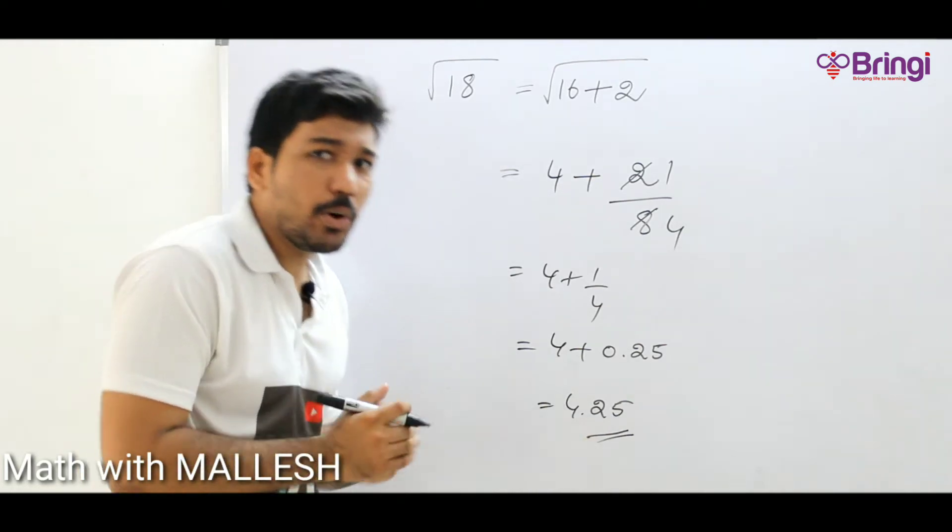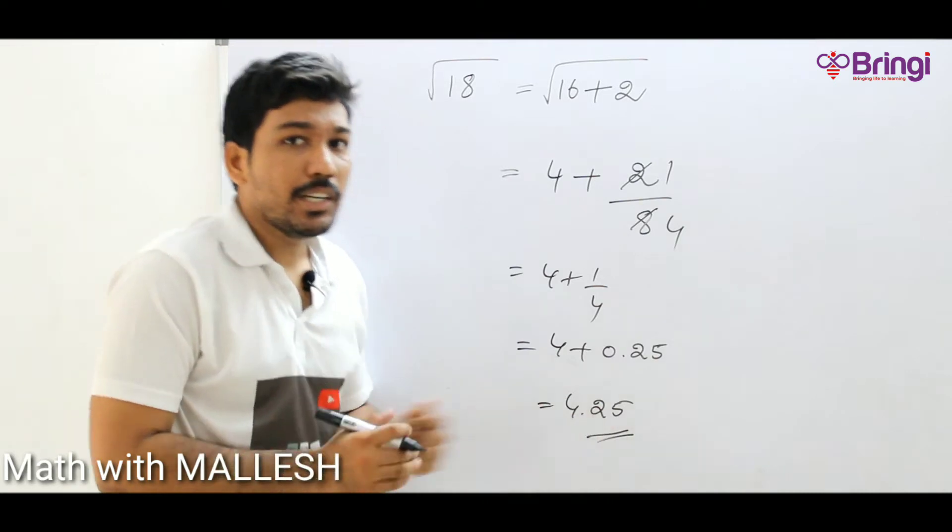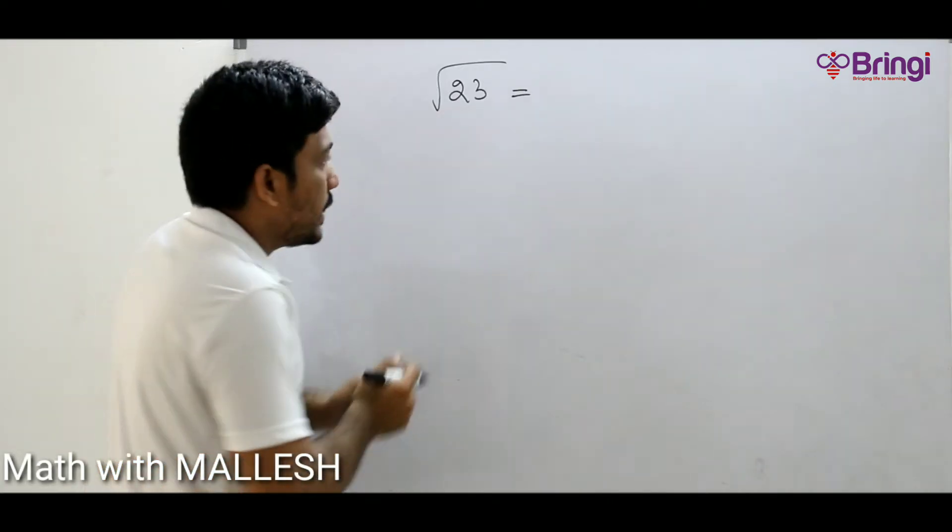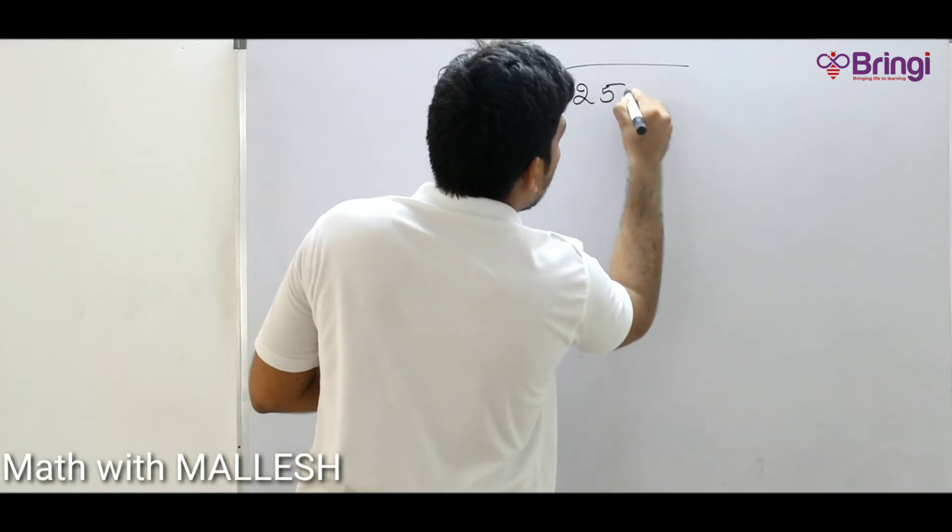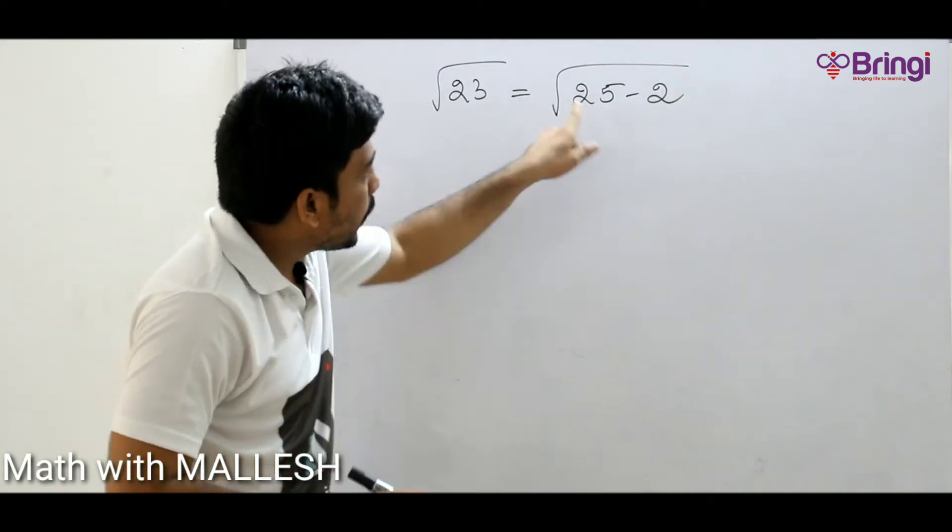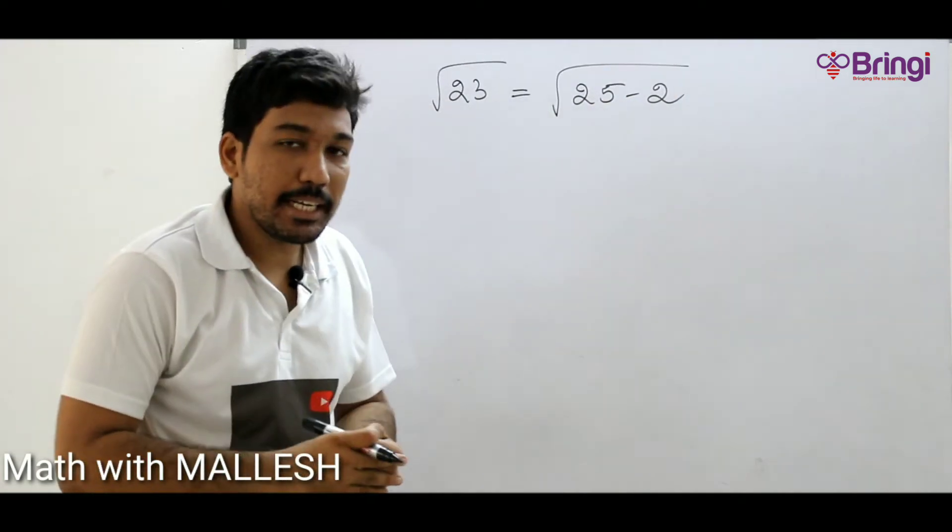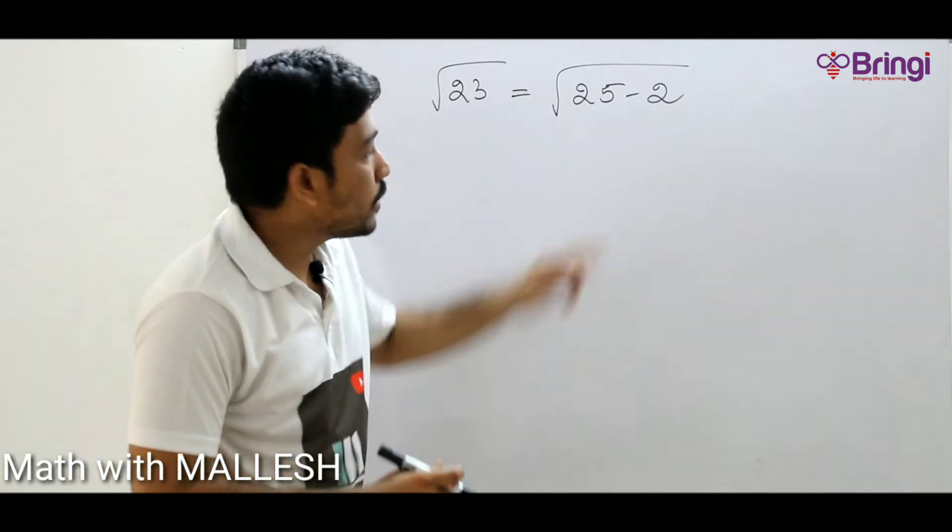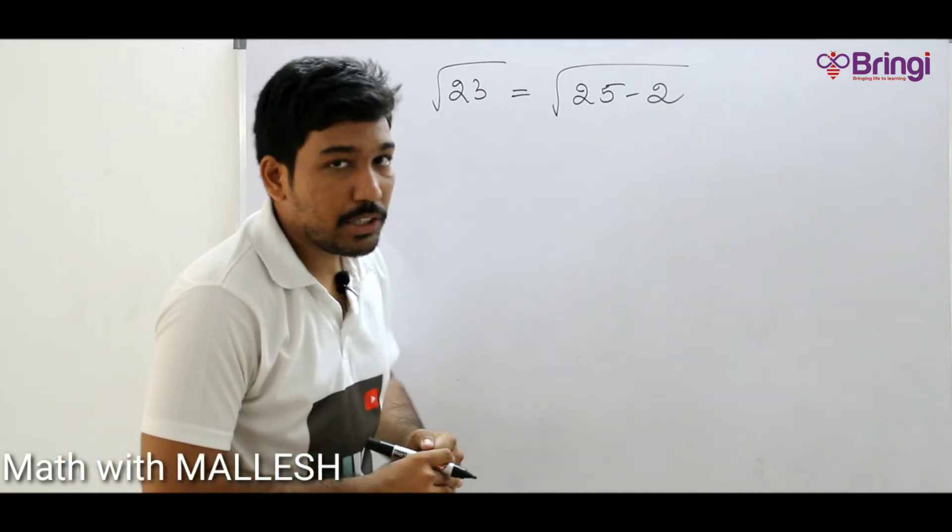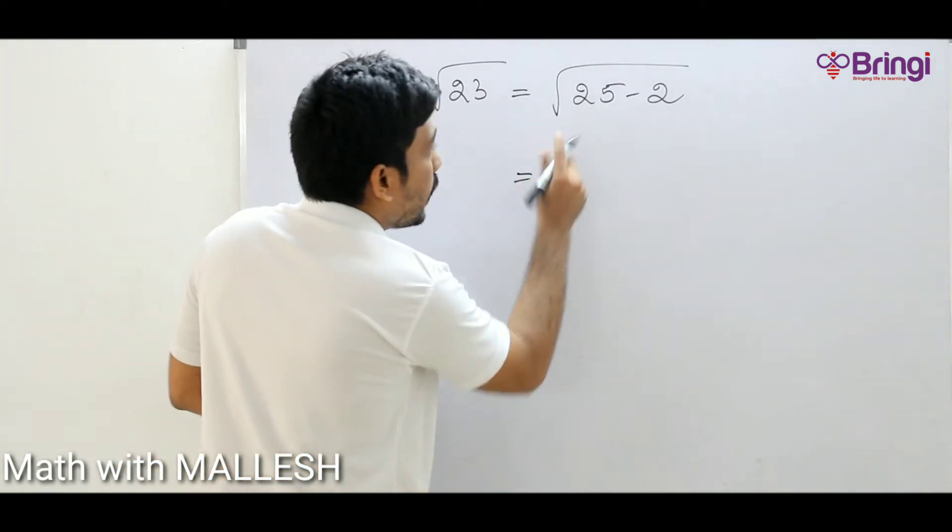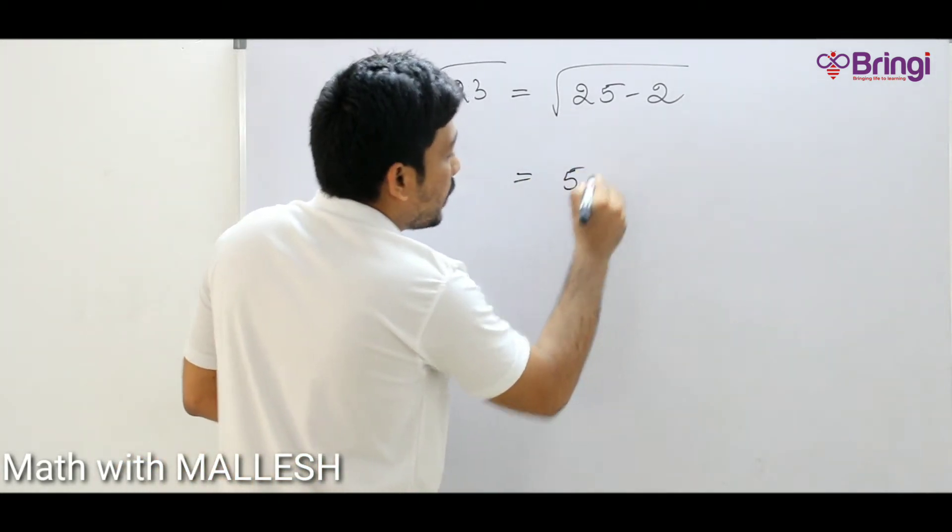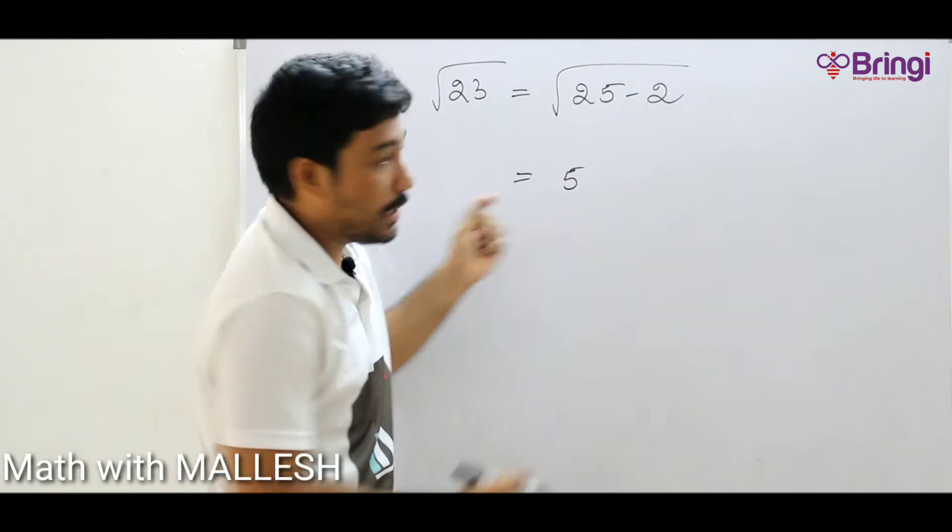Root 23. Root 23 I am writing as 25 minus 2. Before I written positive, now I written negative. From 25 I am subtracting 2. Why? Because 25 is the perfect square root number. What about 25 value? 5. Square root of 25 value 5, and what is the symbol? Minus.